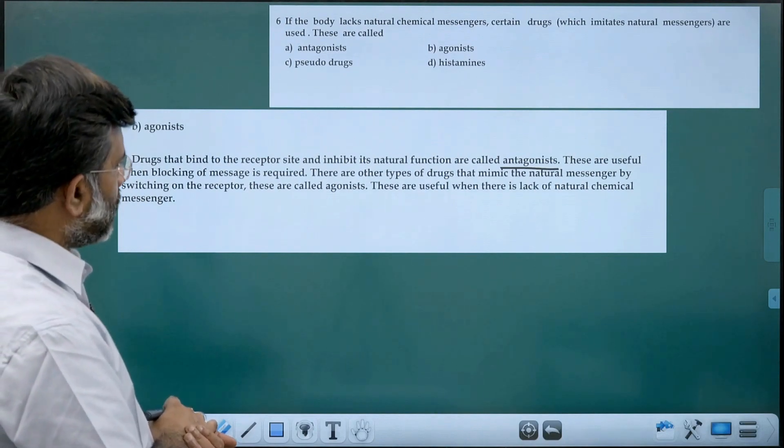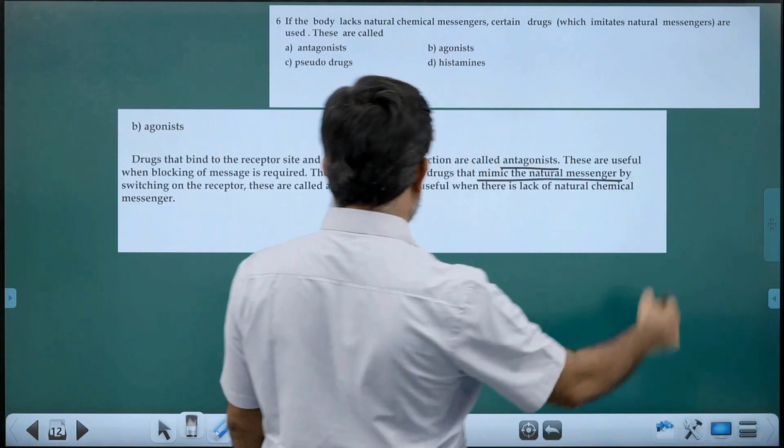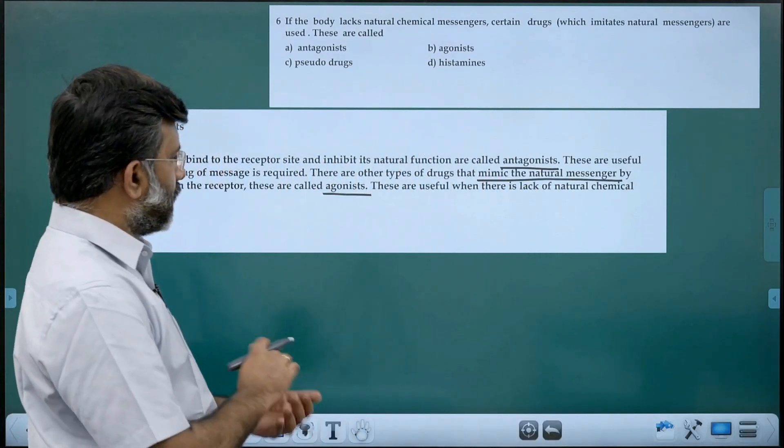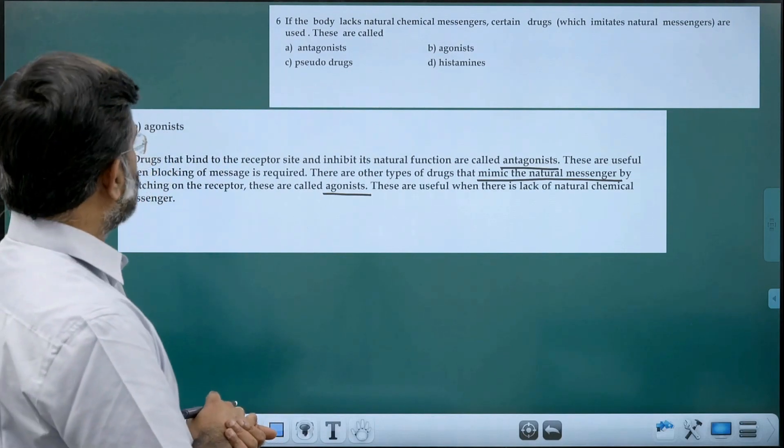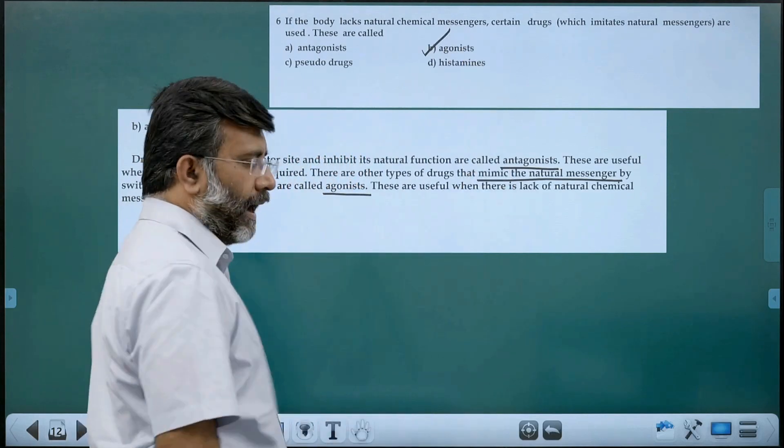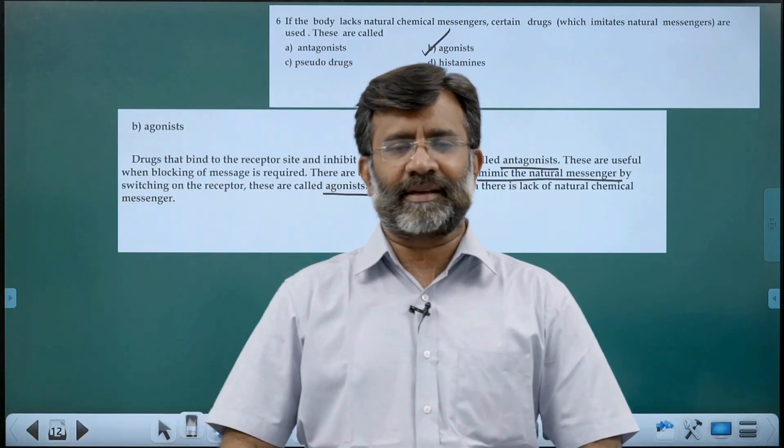There are other types of drugs that mimic the natural messenger and that is called agonist, which is useful when there is a lack of natural chemical messenger. And the answer is option b: agonist. Agonist and antagonist are classes of drugs.